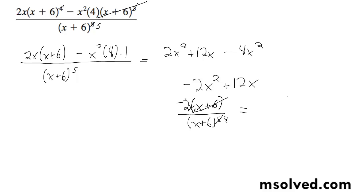So we're going to end up with negative 2x over x plus 6 raised to the 4th. That's it.